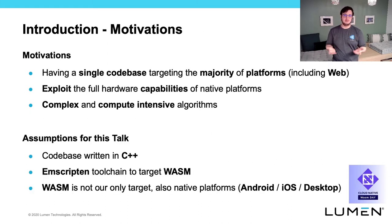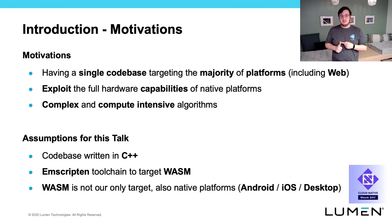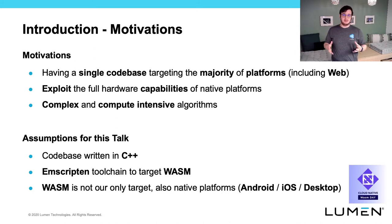Talking about motivations, here are the key points that convinced us to migrate from JavaScript to C++ and target Wasm. First, we wanted to have a single code base targeting the majority of platforms, including Web. Then, we wanted to be able to fully exploit the hardware capabilities of native platforms. And finally, some of our algorithms were pretty complex and compute-intensive.